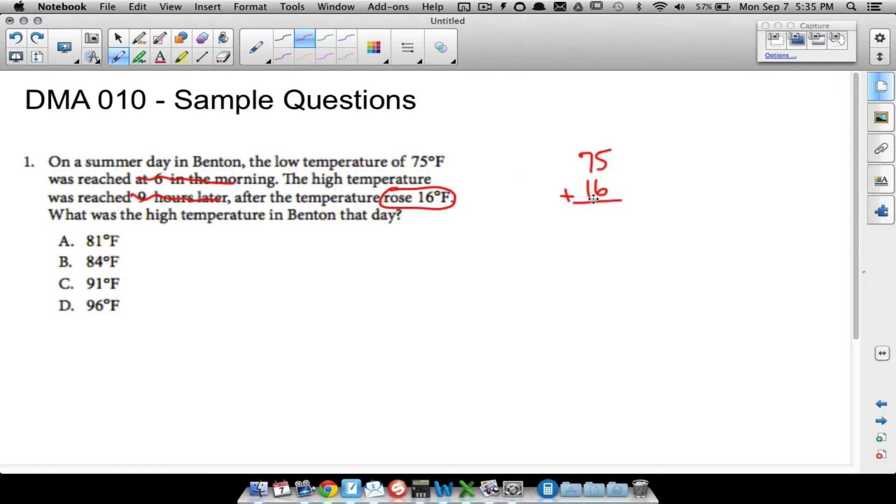75 plus 16, you definitely want to be able to do this without a calculator. 5 and 6 is 11, put down your 1, carry your 1 over. 7 and 1 and 1, that's going to give us 9, so our high temperature is going to be 91°F. Some multiple choice tips: we could eliminate A and B because those are pretty close to 75, not even 10 degrees higher, so D is your definite choice right there.